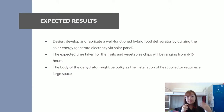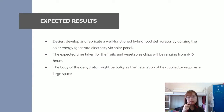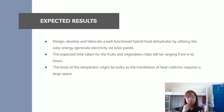For the expected result, this project will design, develop, and fabricate a well-functioning hybrid food dehydrator utilizing solar energy. It also uses a solar panel to generate electricity. The expected time for food to be dried will range from 6 to 16 hours. The body of the dehydrator will be relatively large, as the installation of the heat collector requires a large space to absorb solar heat.